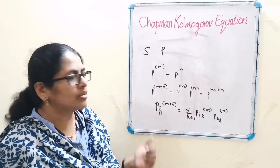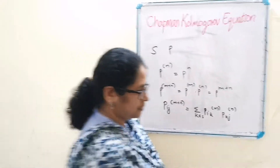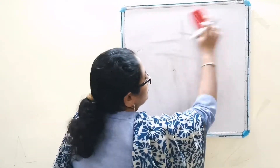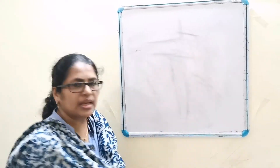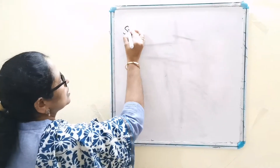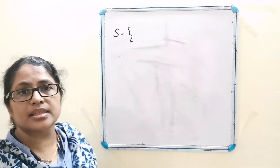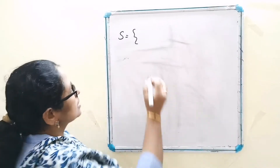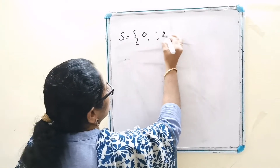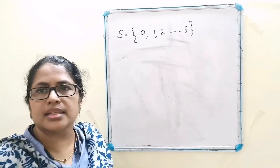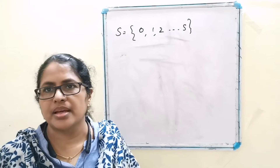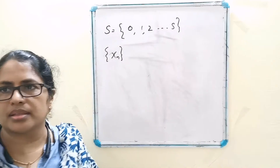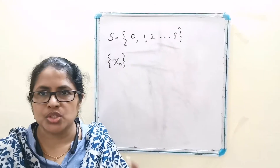Now let's consider the proof. Let S be the state space, S equals {0, 1, 2, 3, ...}, and let the sequence X_n be a Markov chain.